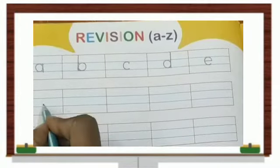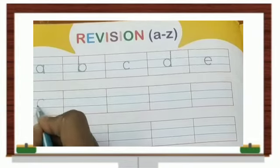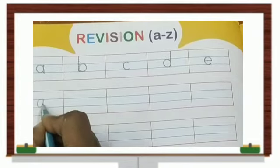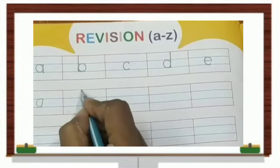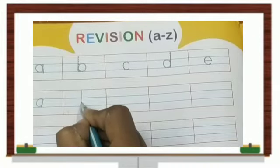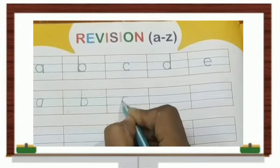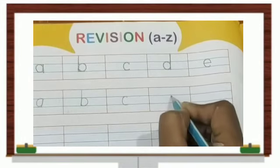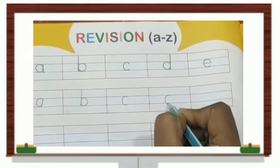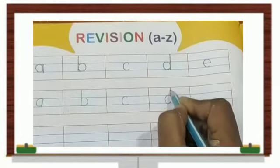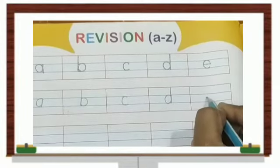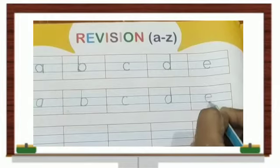So let's write here. Small letter A. Go up and come down. A. B. C. D. E. Right?